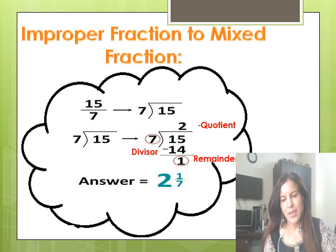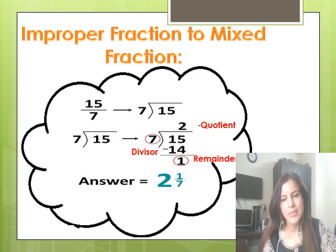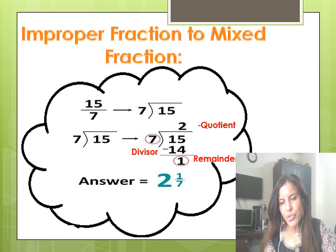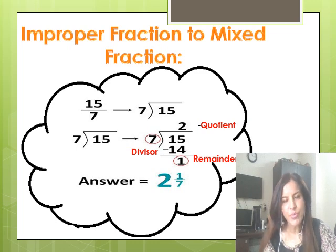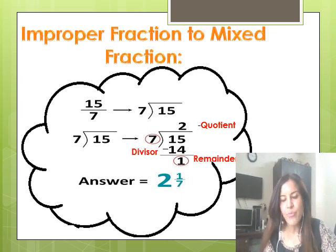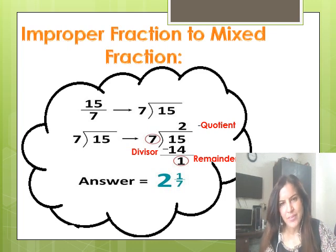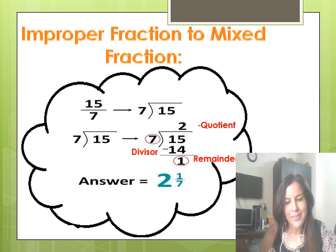Mixed fractions are derived from improper fractions, and you know how to convert improper fractions to mixed fractions. Let's look at this example: 15 upon 7, which is an improper fraction. To convert it to a mixed fraction, first divide the numerator by the denominator. 15 divided by 7 gives 2 as the quotient, 1 as the remainder, and 7 as the divisor. In a mixed fraction we write: quotient, then remainder upon divisor. So 1 upon 7 is the proper fraction and 2 is the whole number. This is how we convert 15 by 7 to a mixed fraction.